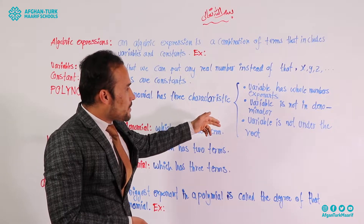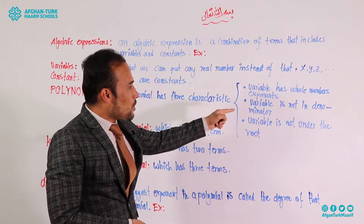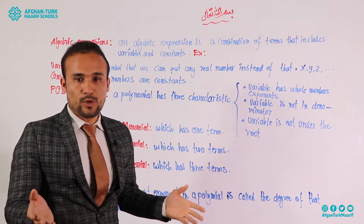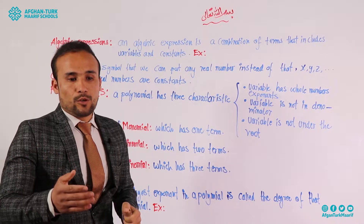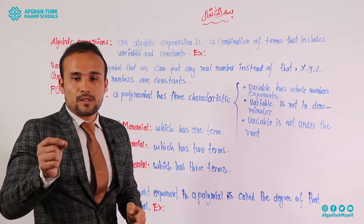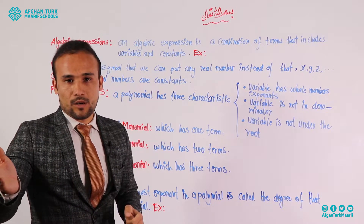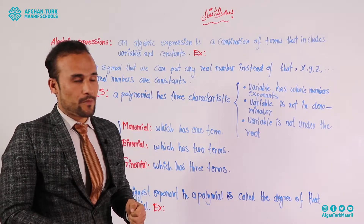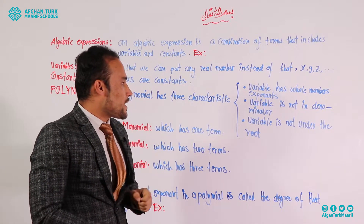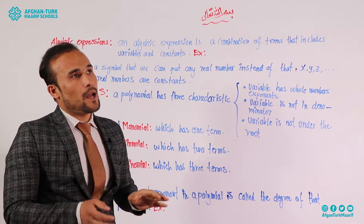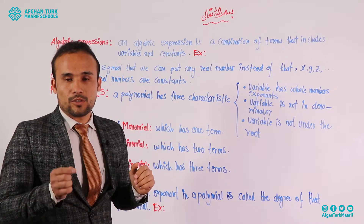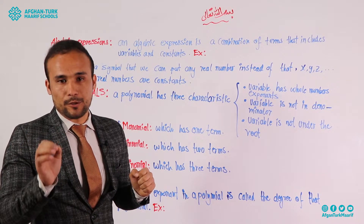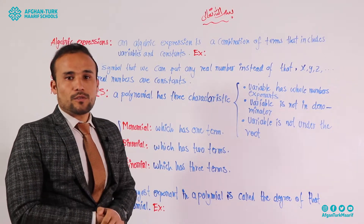The second characteristic is that the variable is not in the denominator. It means that in any polynomial, the variables — X, Y, Z, or any variable — must not be in the denominator. And the third characteristic is that the variable is not under a root. In any polynomial, the variables should not be under the root. That's the third characteristic of a polynomial.